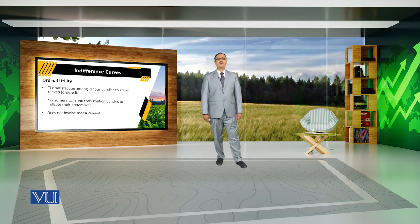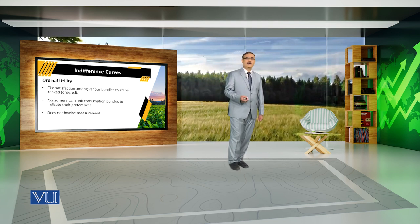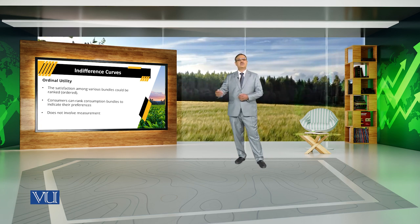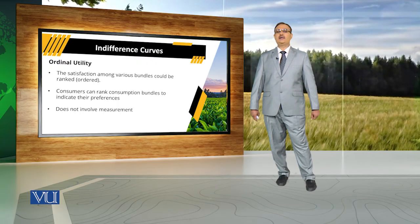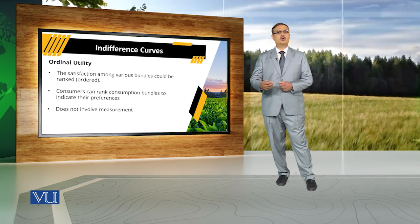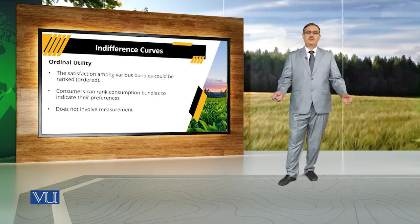Under the ordinal approach, we assume the consumer is getting satisfaction from a consumption bundle, and that consumption bundle usually includes a large number of goods and services. The utility from a particular commodity depends upon the quantity of other commodities too. Under the ordinal approach, we are also in a position to rank the level of satisfaction against different consumption bundles. We are not measuring utility numerically; we are only making comparisons and assigning ranks or orders to different consumption bundles.